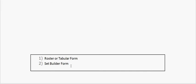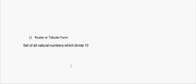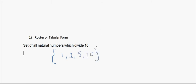In the roster or tabular form, when we define a set, every element of that particular set is listed. For example, consider the set of all natural numbers which divide 10. The set will be represented as {1, 2, 5, 10}. These are the elements which form this particular set. Every element of this set is listed in this form.